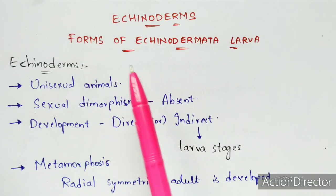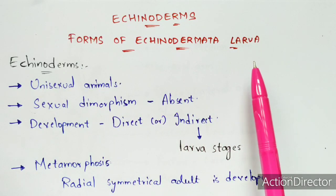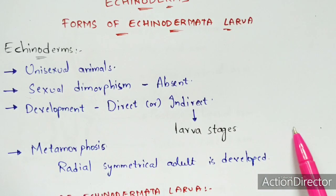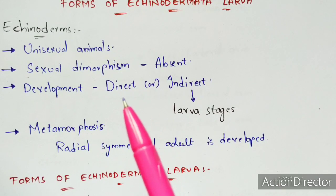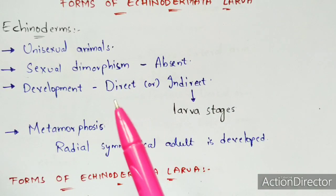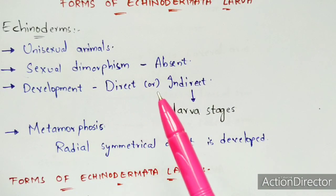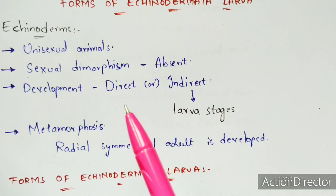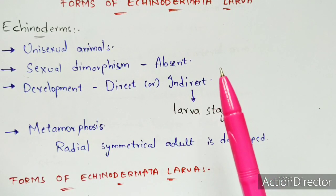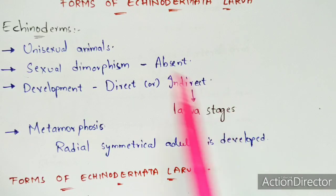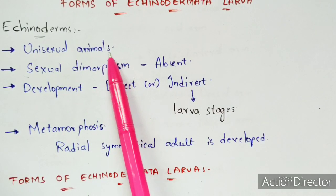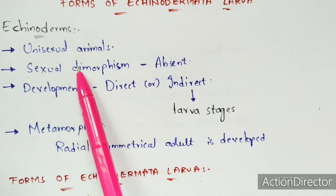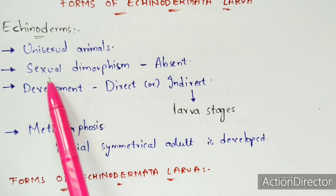Echinoderms are unisexual animals. Unisexual means the sexes are not separate — an individual may be either male or female, but both male and female are not present in the same organism. In contrast, human beings are bisexual, meaning the sexes are separate as male and female. Echinoderms exhibit this unisexual characteristic — the sexes are not separate.